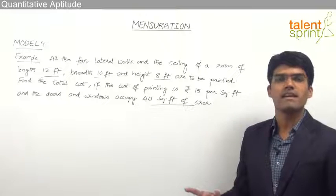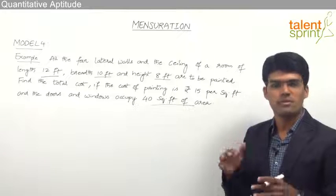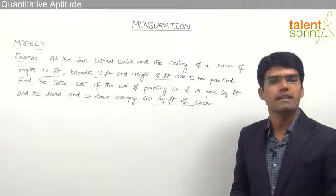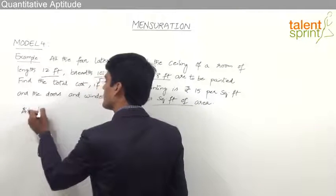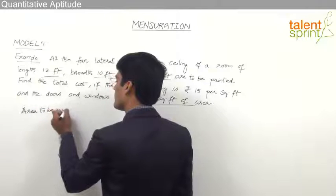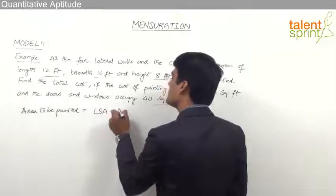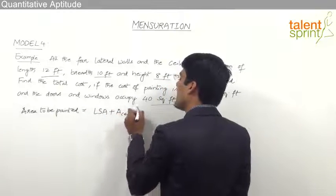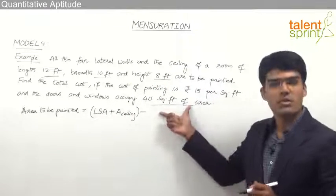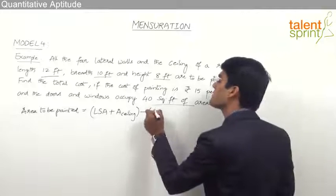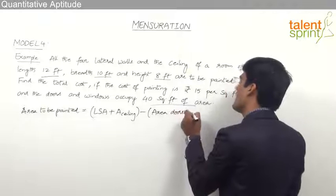The total surface area includes the area of all six walls — the four surrounding walls, the base and the top. So if we subtract the area of the floor we get the required area to be painted. The area to be painted is the lateral surface area of the cuboid plus the area of the ceiling, minus the area occupied by doors and windows, since doors and windows are not painted.